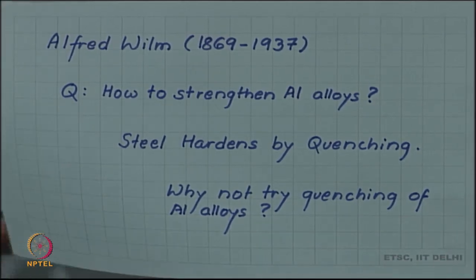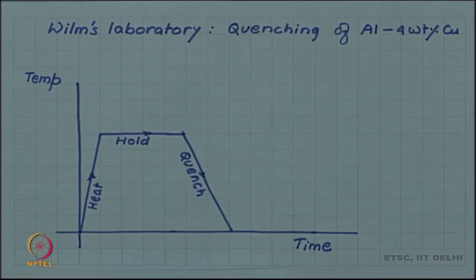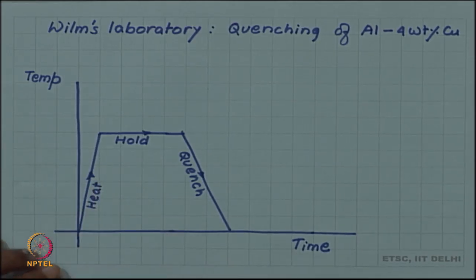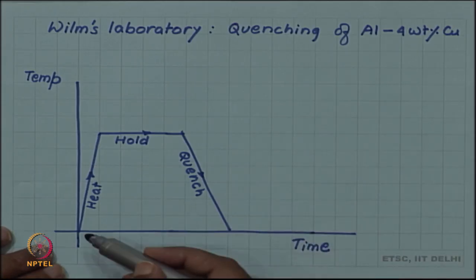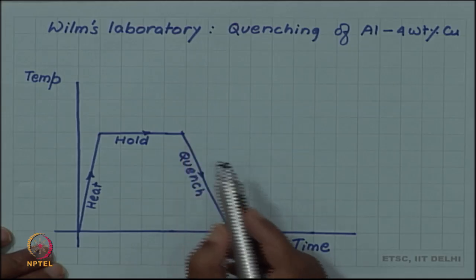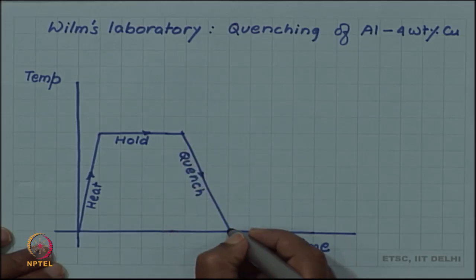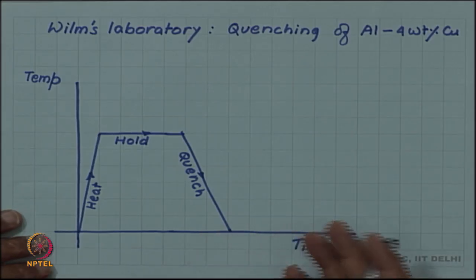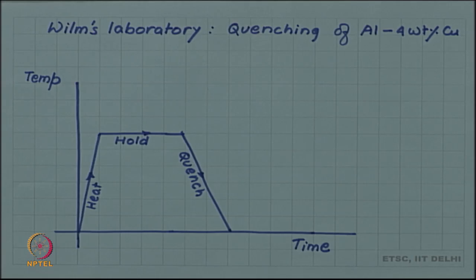He developed a program of quenching aluminum alloys in his laboratory. Let us visit Wilm's laboratory and look at his experiments. As you know temperature and time graph can be made for any heat treatment process. He planned to heat the aluminum alloy, hold it and then quench it and after quenching measure the hardness. The expectation was that like steel maybe the hardness of aluminum alloy also after quenching will increase.